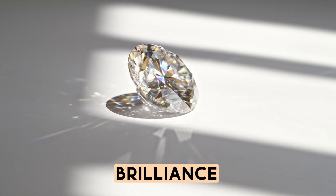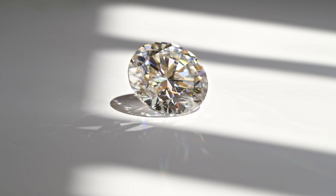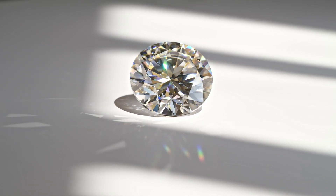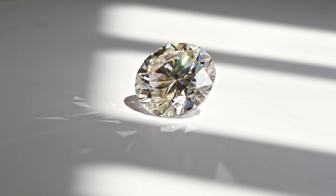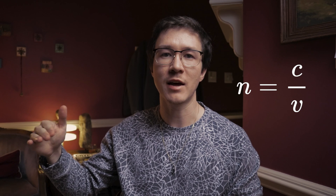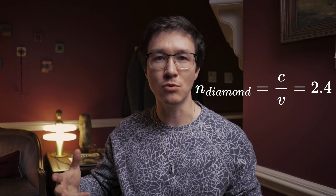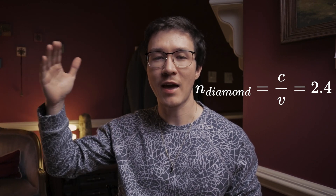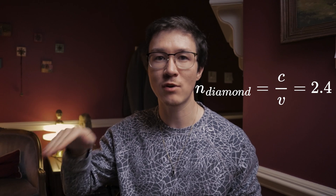The two most important features that give rise to brilliance — these flashes of light — are: one, that a lot of gems have a high refractive index, and two, simply the way that the stone is cut. The refractive index of a material refers to how much that material slows down light, or equivalently how much it bends light. It's defined as the speed of light in vacuum divided by the speed of light in the material. Diamond has a refractive index of about two, meaning light travels at literally half its normal speed through diamond.